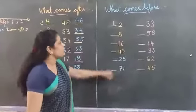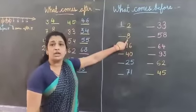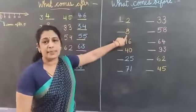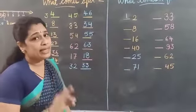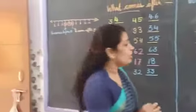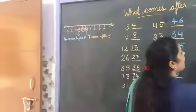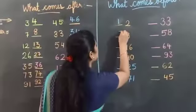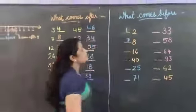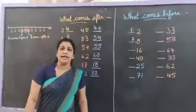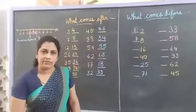And next number is 8. Which number is this? 8. What comes before 8? 8 ke pehle kya hota hai? 7. 7 comes before 8. Have you got it?